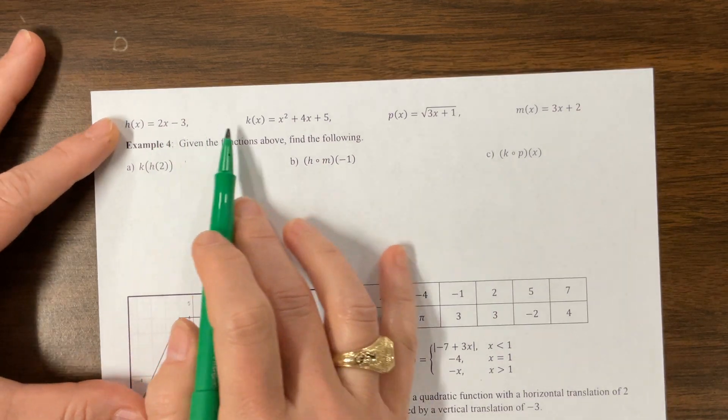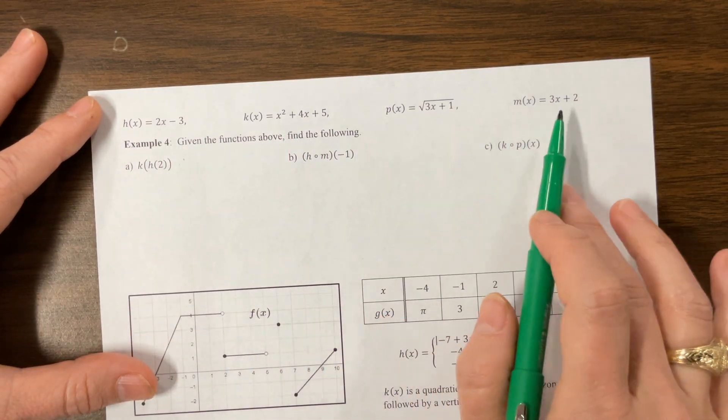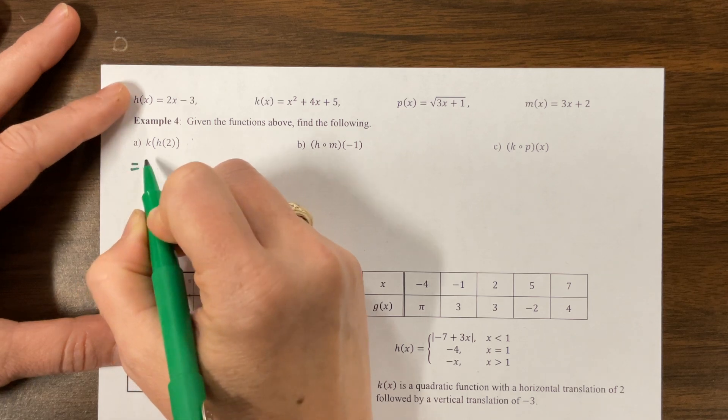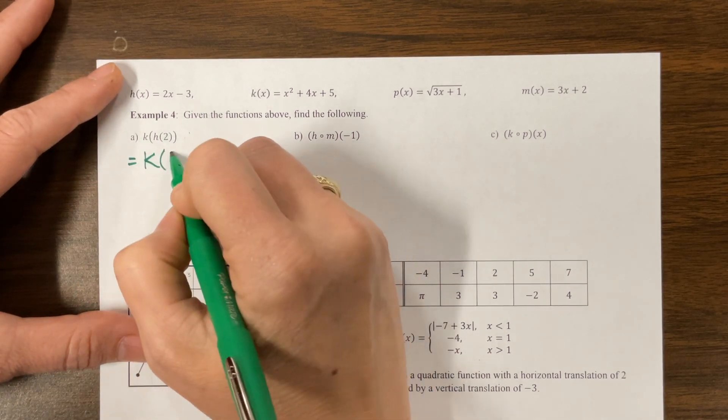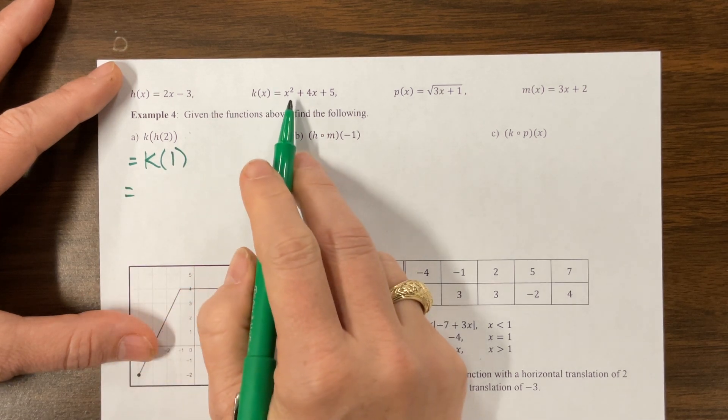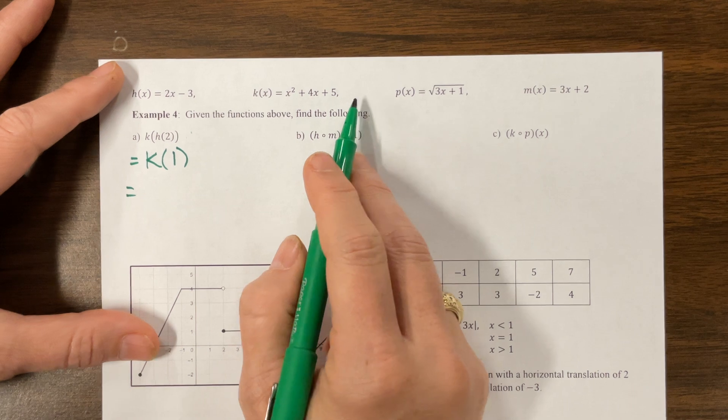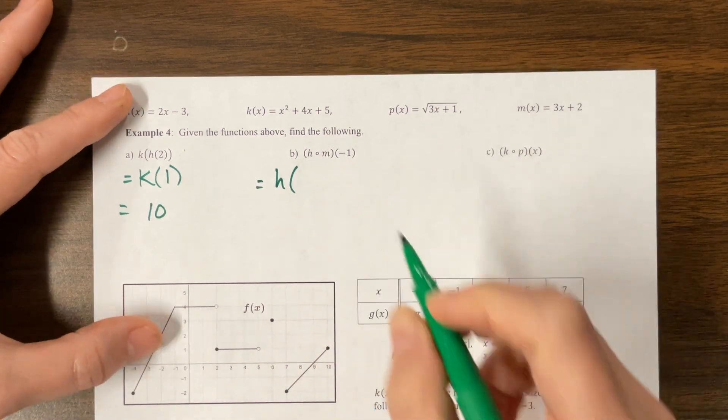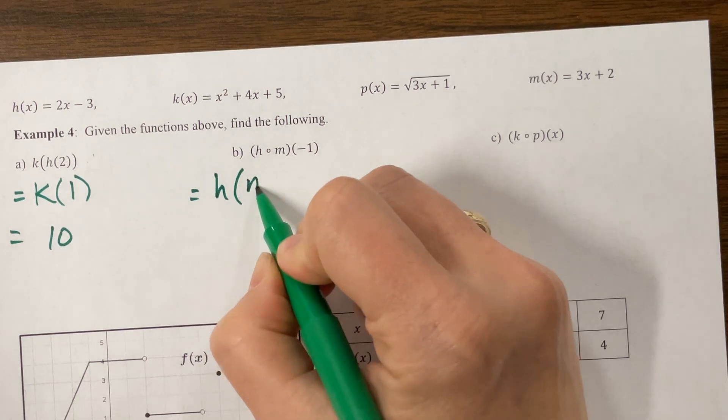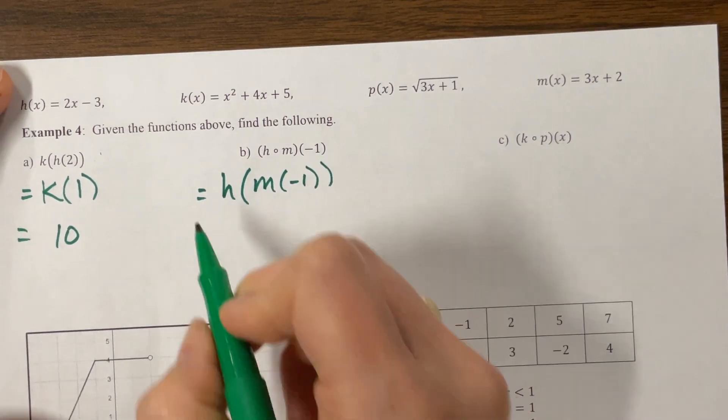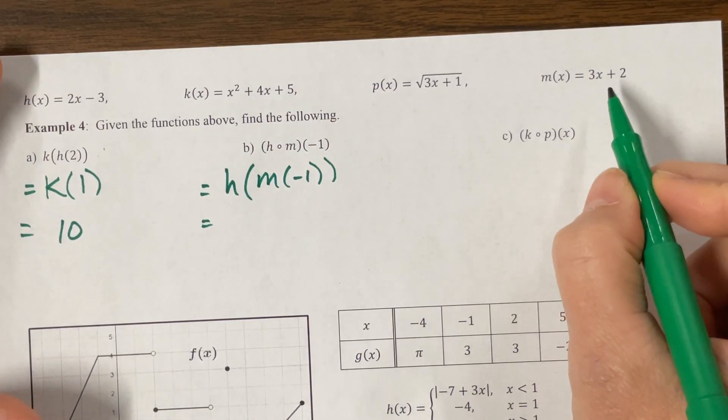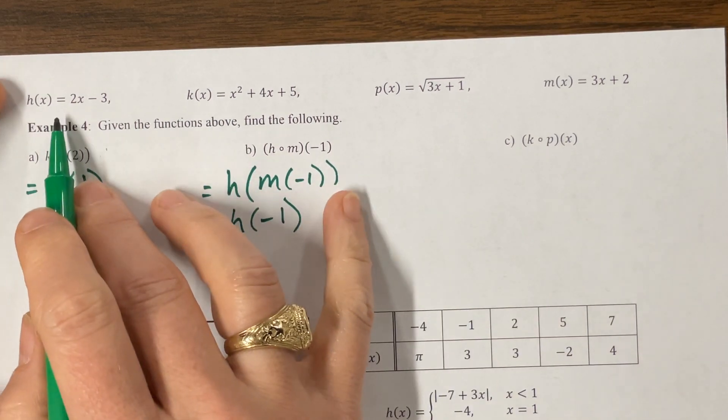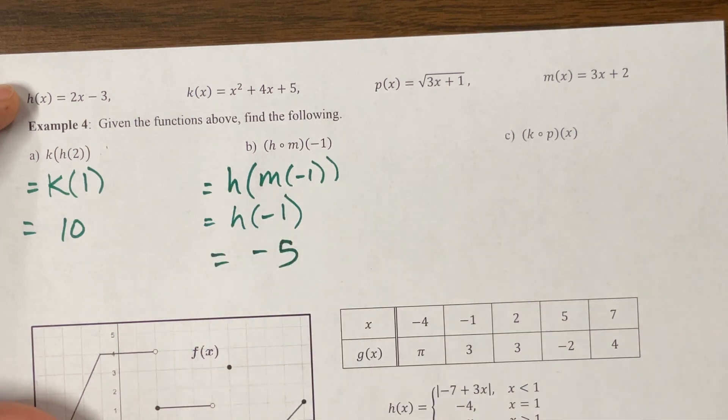Now we've got some new expressions. We have h is 2x - 3, and we've got a linear quadratic, a square root, and another linear. So I have, this will be k of h of 2. 4 minus 3 is 1. k of 1. 1 squared is 1 plus 4 plus 5. 1 plus 4 plus 5 is 10. This notation is accurate, I prefer when it's in this form. m of negative 1 over here is negative 3 plus 2 is negative 1. So that's equal to h of negative 1. Negative 2 minus 3 is negative 5.